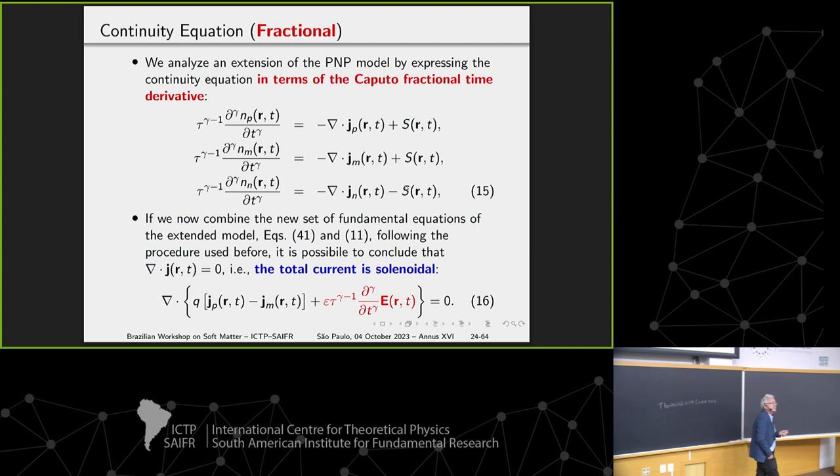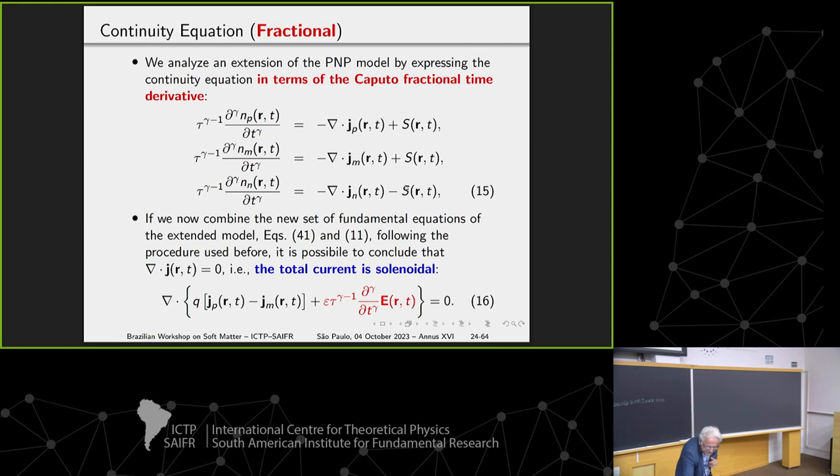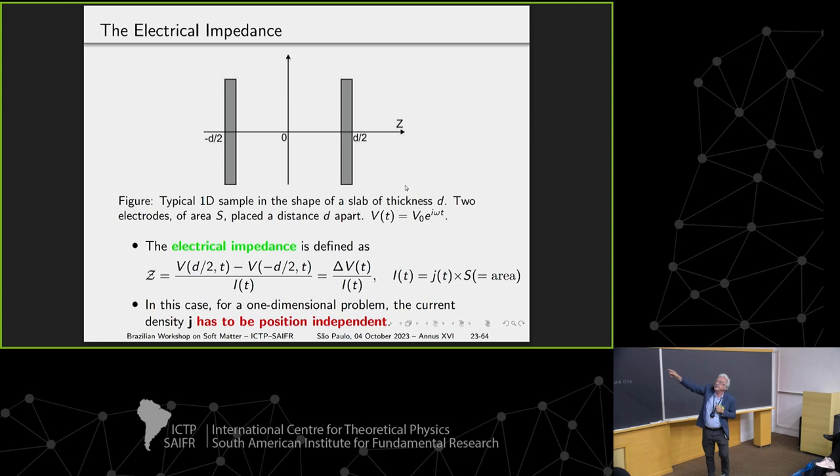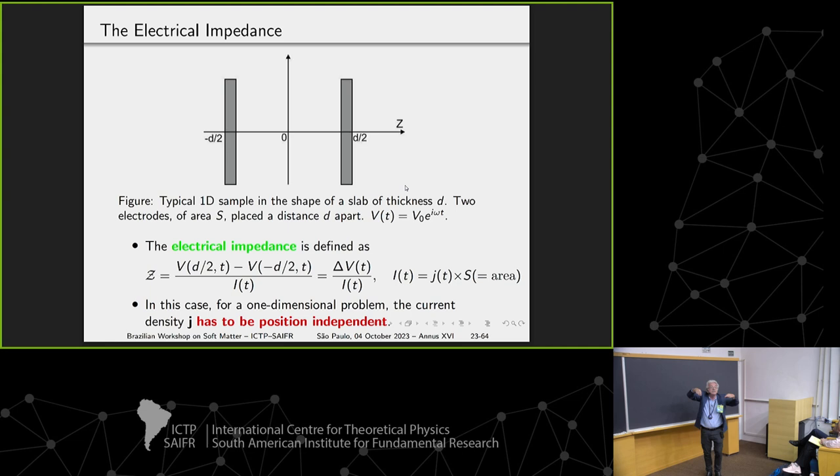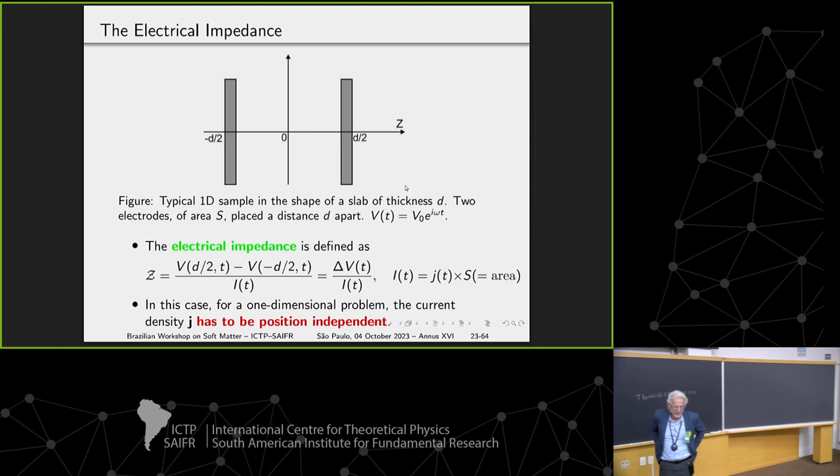By using this definition, of course, the impedance is the potential difference in the sample divided by the current, the current in the total circuit.